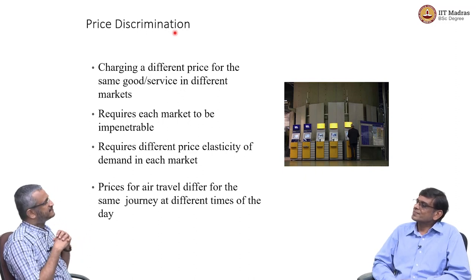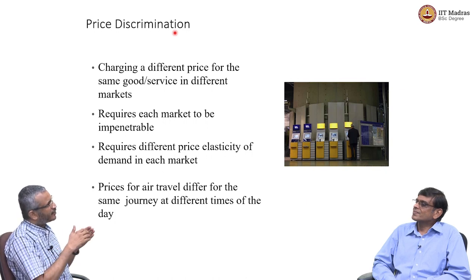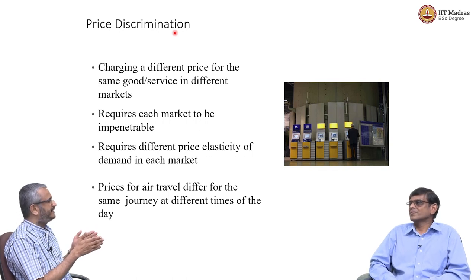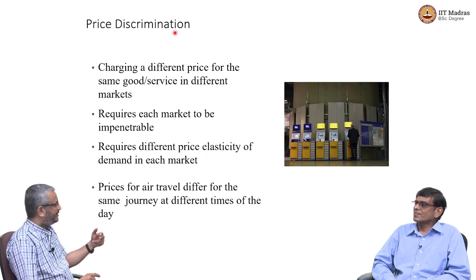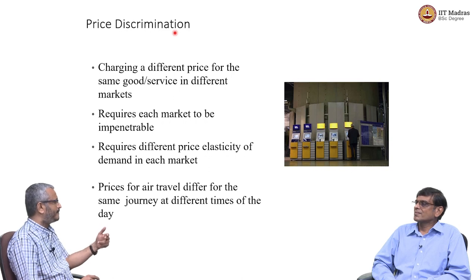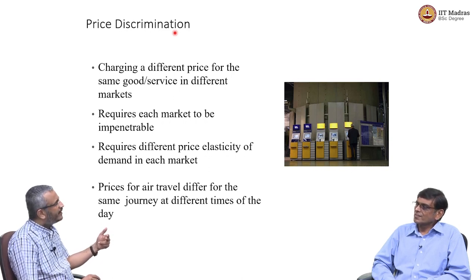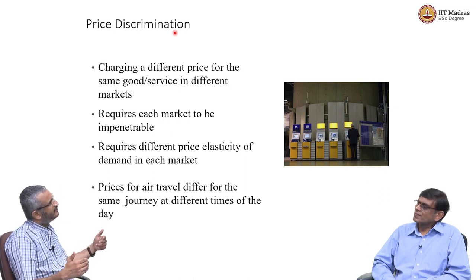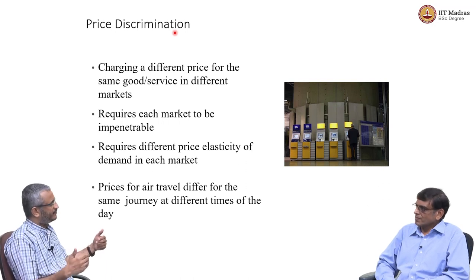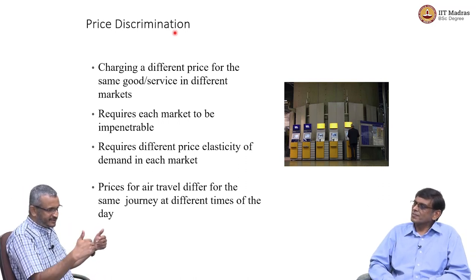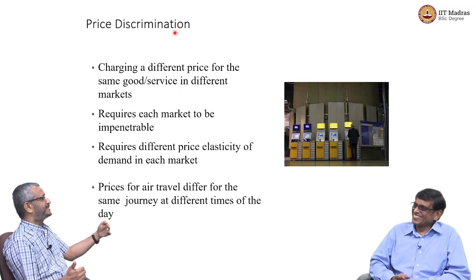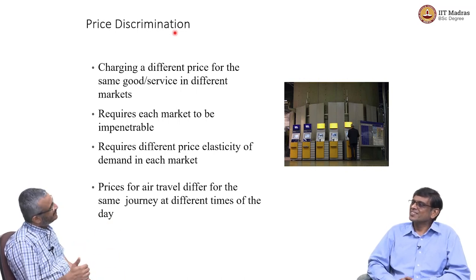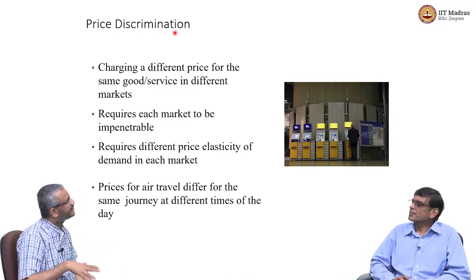A second derivative of price discrimination is cross-price subsidization. The same service provider charges one customer more — someone with ability and willingness to pay — while subsidizing another customer who cannot afford to pay more. The subsidy given to customer 2 is recovered from customer 1. Electricity pricing and a number of services work exactly this way.